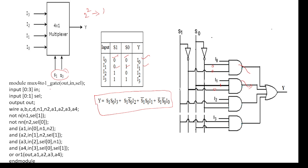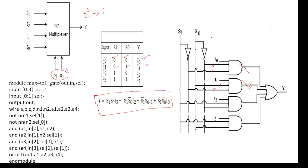To write the code for this, there are 4 inputs I0 to I3, 2 selection lines, and 1 output. We need to declare the wires after that. For example, we can name them A, B, C, D and also N1, N2 wires, plus A1, A2, A3, A4 wires.